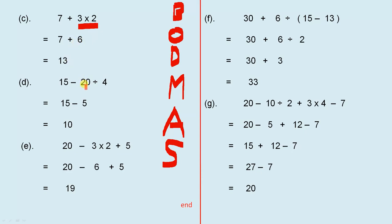The next part, we have subtraction and division. Division comes first. We have to do the division first. So we've got to do that part first. 20 ÷ 4 gives us 5. 15 - 5 gives us 10.